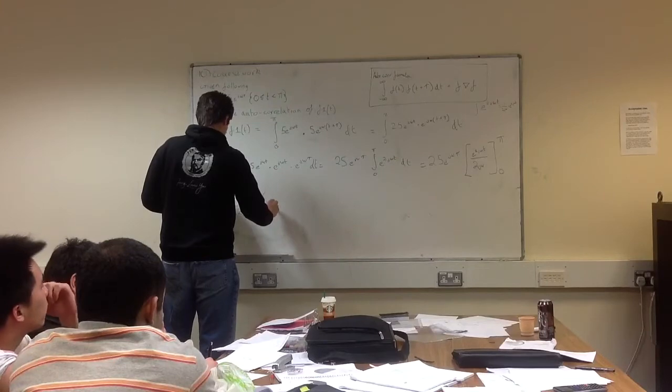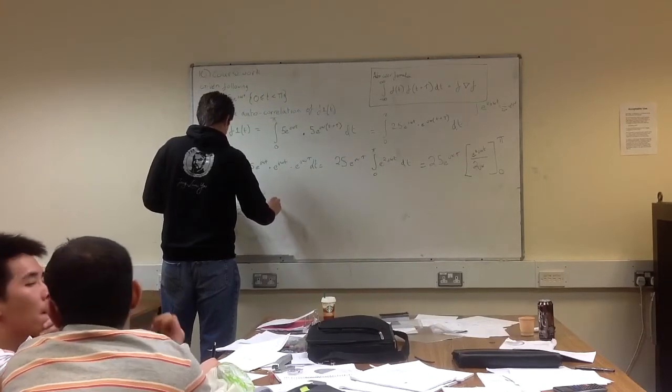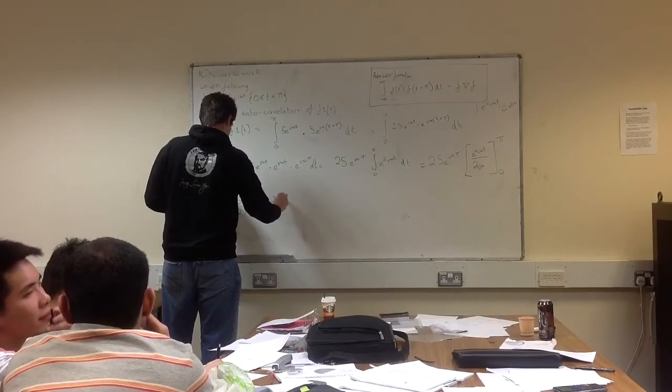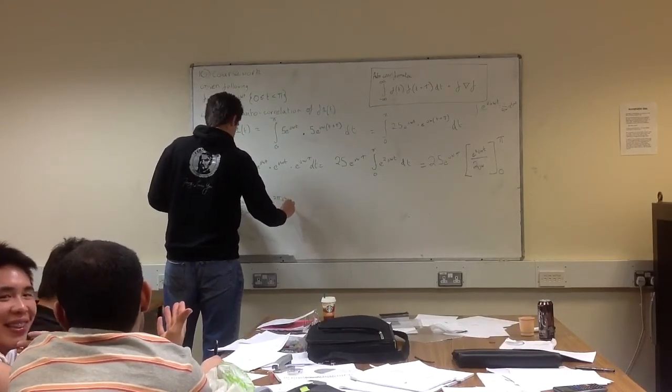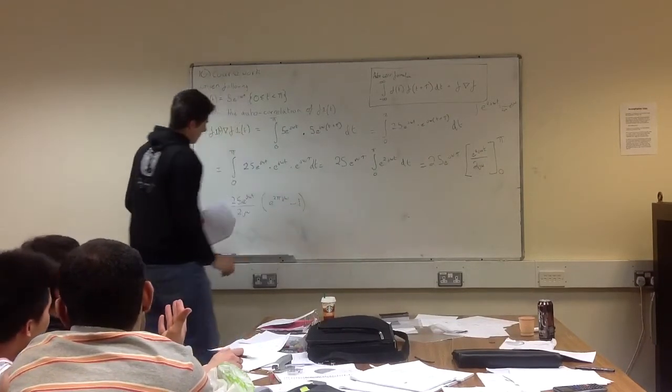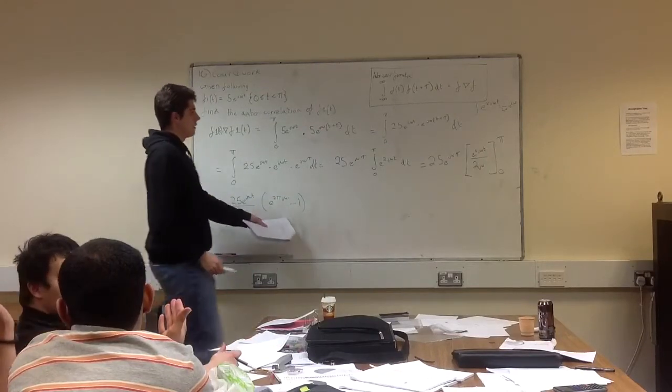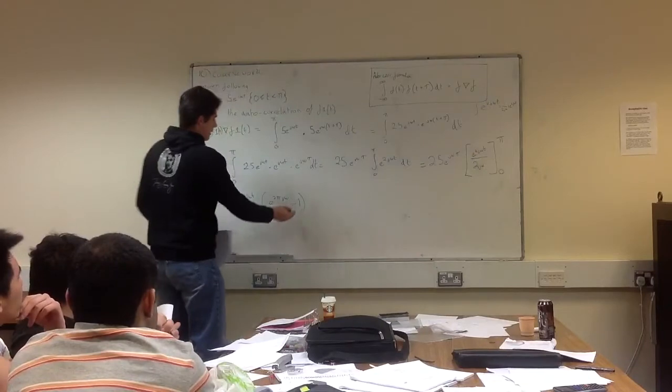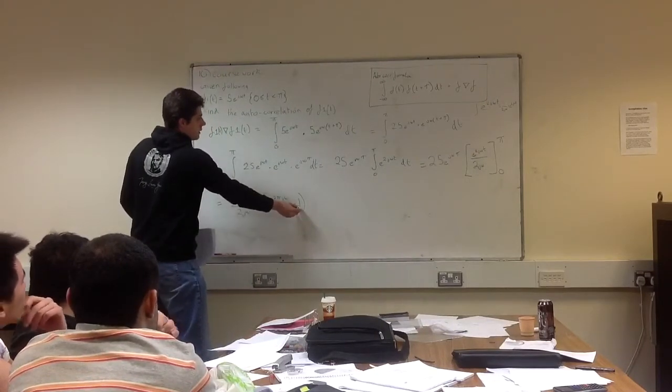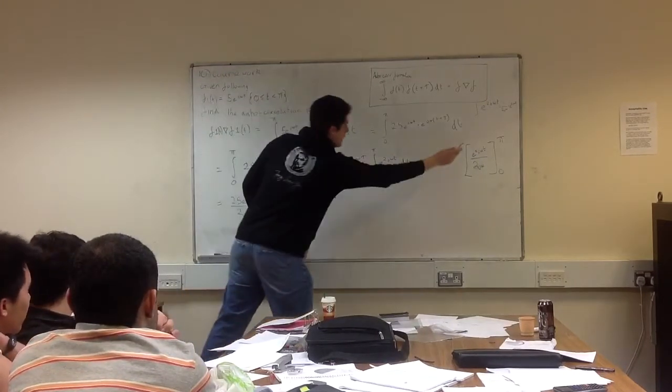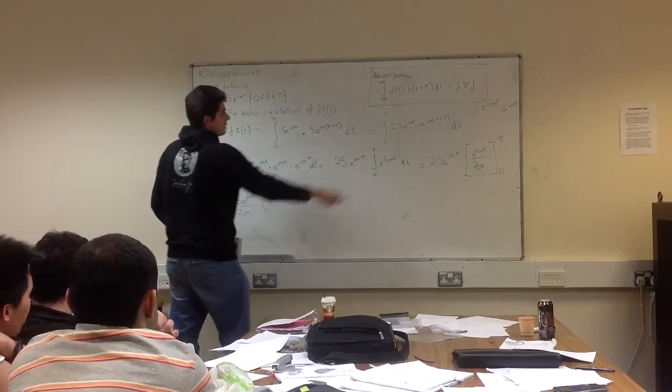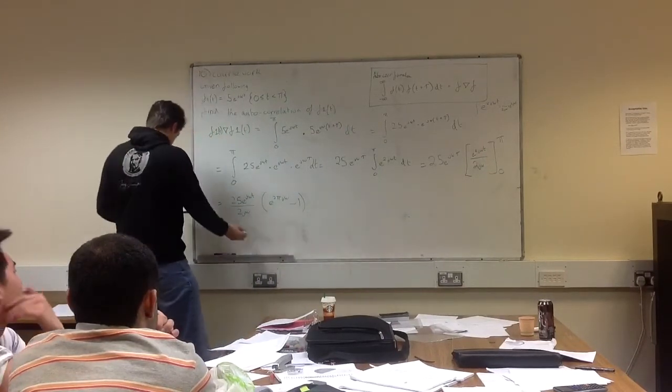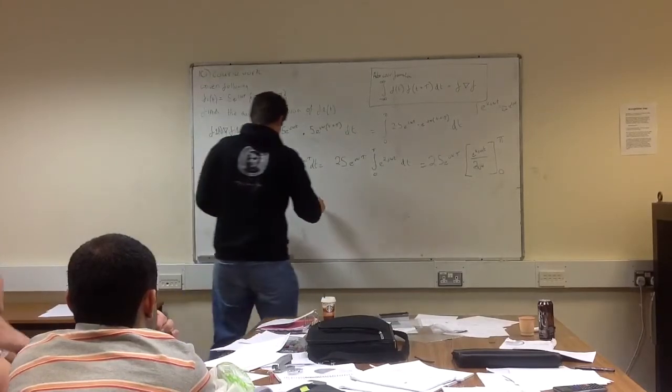And we're left with... Right, that's just that, so you evaluate it with 0 in there, with 0 in there is 1, and with pi in there is this expression here, so you do that at the top one first, and it's minus the other expression, so you're going to look at this, then, and go...